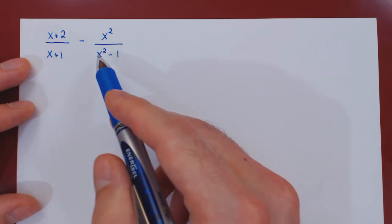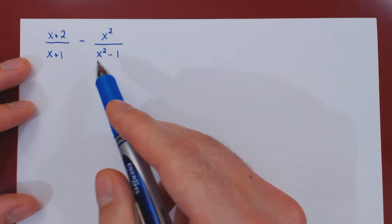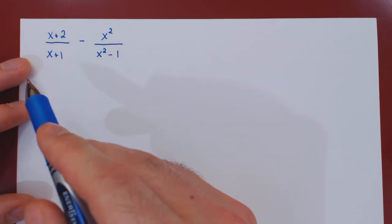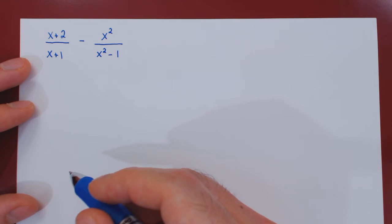If you factor x squared minus 1, it factors as x minus 1 times x plus 1, and factoring out this common factor will simplify our work.